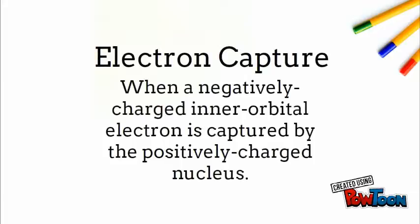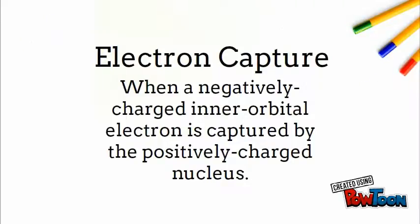Relating to this, electron capture is when a negatively charged interorbital electron is captured by the positively charged nucleus. The result is that a proton will combine with this electron and a neutron is formed. This process will reduce the atomic number by one and will not change the atom's mass.